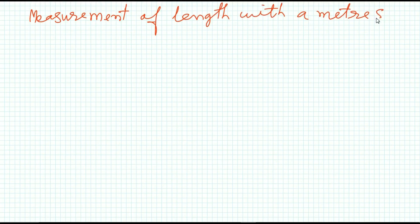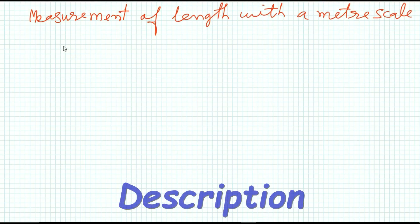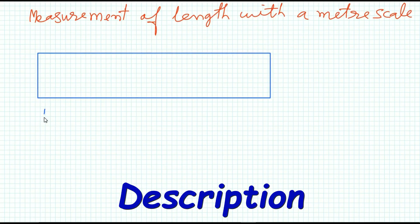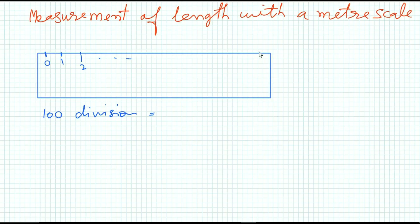In this video I will show you a measurement of length with a meter scale. A meter scale is graduated into 100 divisions in centimeters — from 0 to 100. Each centimeter is again subdivided into 10 equal divisions, so one smallest division of a meter scale equals 1 mm. The meter scale is typically wooden, or sometimes made of flexible plastic as seen in tailor shops.